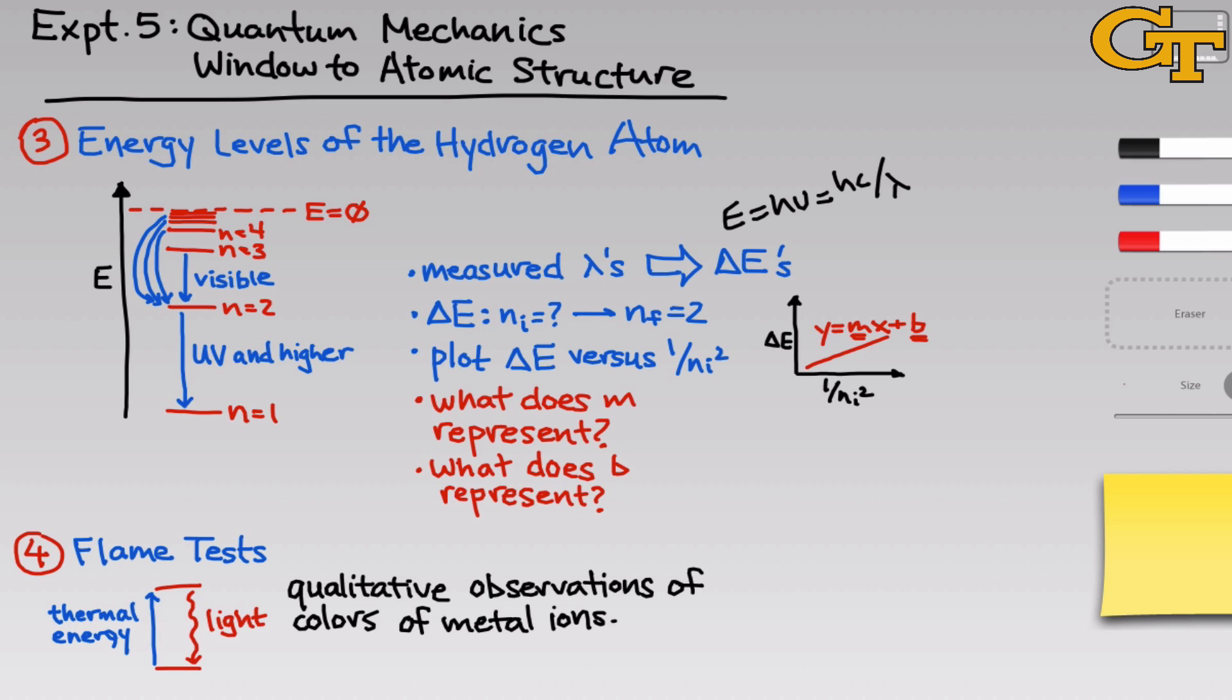So in the last part of the experiment, we'll make qualitative observations of the colors of different metal ions. Although it is possible in theory to measure the light given off by a flame using a spectroscope, for example, to determine the wavelengths emitted, it's a little bit difficult operationally to hold a metal solution in a flame and measure its wavelengths emitted at the same time. So we'll only deal with qualitative observations in this part of the experiment.